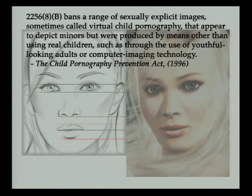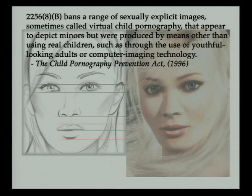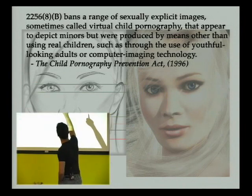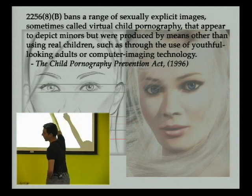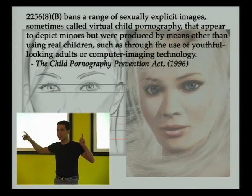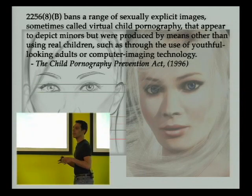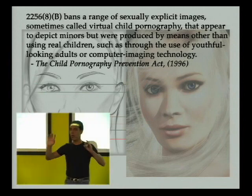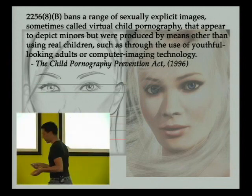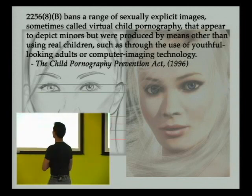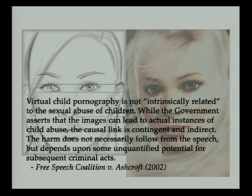It is certainly in the law in a very profound way. In 1996, Congress passed what's called the Child Pornography Prevention Act. They wrote that they were going to ban a range of sexually explicit images, sometimes called virtual porn, that appear to depict minors but were produced by means other than using real children, such as using youthful adults or computer imaging technology. So what they said is that computer-generated images — even though no child was involved in the creation and no actual child is depicted — we're going to make that image illegal in addition to child pornography. The Free Speech Coalition sued.